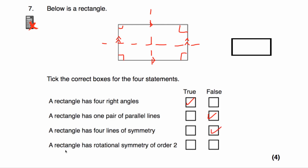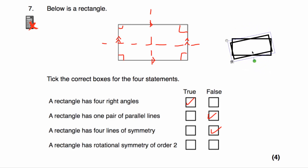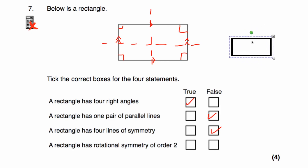The last statement: a rectangle has rotational symmetry order two. If we rotate it through 180 degrees it lands on itself once, and back to 360 degrees it lands on itself twice — so that's true. Summary: four right angles true, one pair of parallel lines false, four lines of symmetry false, rotational symmetry order two true.